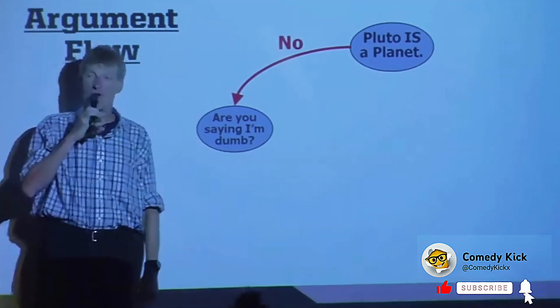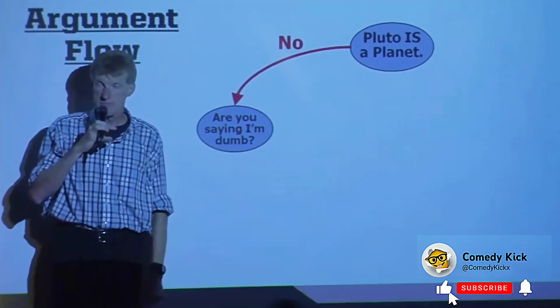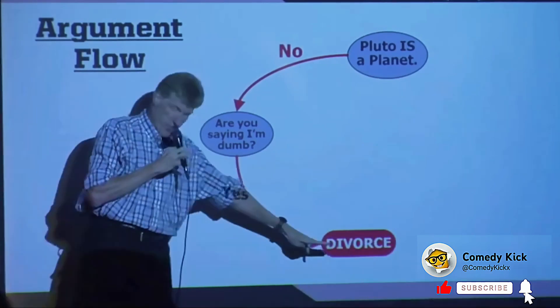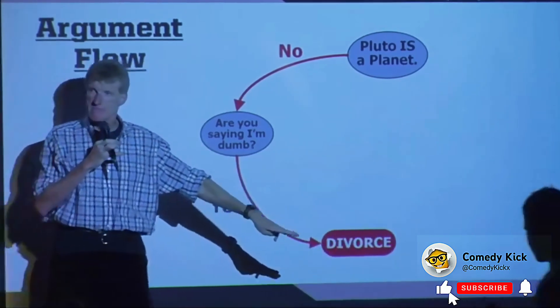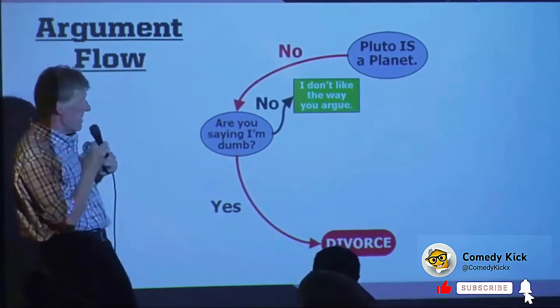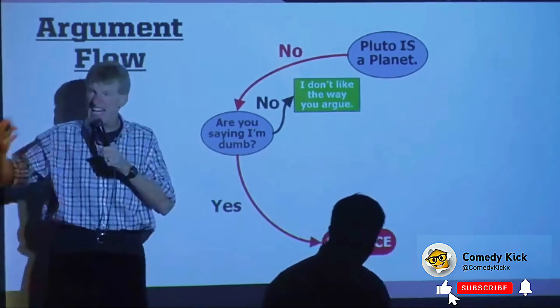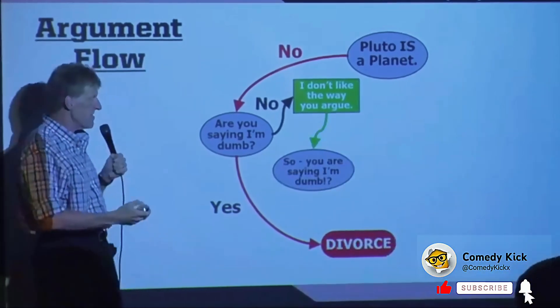That is what we call a trap. Because if I say yes, that leads to divorce. So I'm not dumb. I say no. She goes, well, I don't like the way you argue. You're basically doing science and math and logic and you are saying I'm dumb.